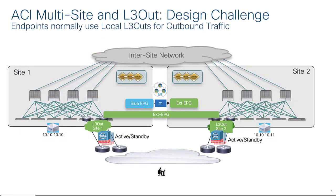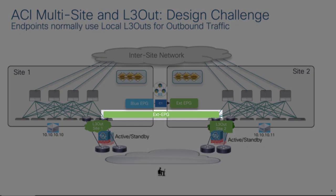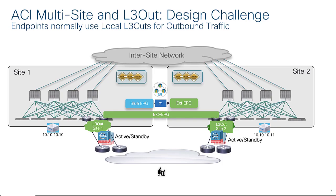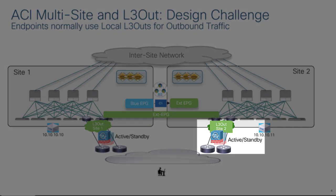Let's start out by having a better understanding of what is the design challenge when you have Multisite and you have layer three outs in each of those sites. We can see here we have EPG blue, which is a stretched EPG. On the left we have an endpoint at 10.10.10.10, and on the right in site number two, we have another endpoint in the same stretched EPG at 10.10.10.11. We also have created an external EPG that is stretched across both sites. Locally within each site, we have our own independent layer three out front-ended by a firewall that leads to the outside world.